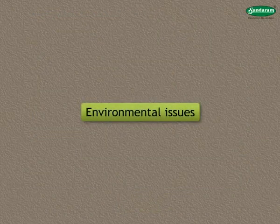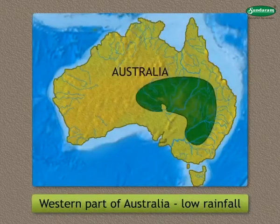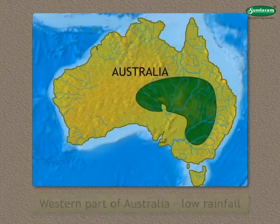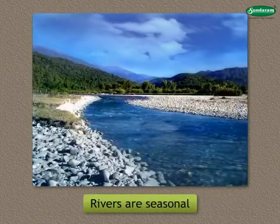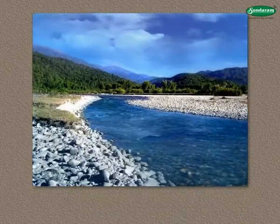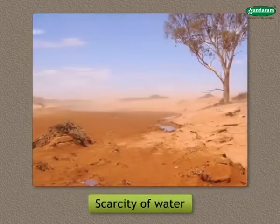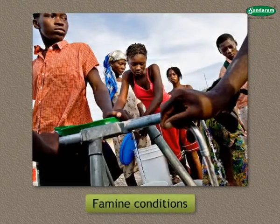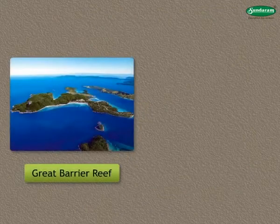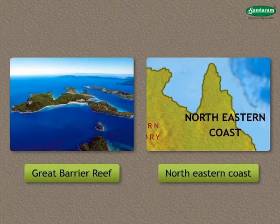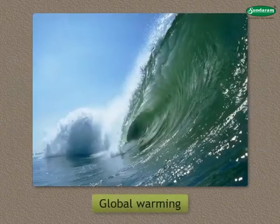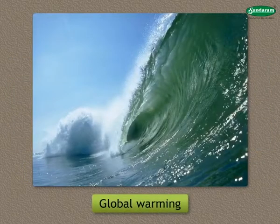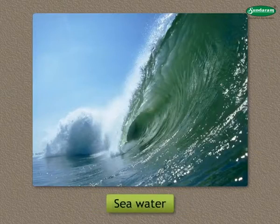Environmental Issues: 1. The western part of Australia gets low rainfall. Therefore, most of the rivers here are seasonal. This has created the problem of scarcity of water, and as a result, people in this region have to face famine conditions. 2. The Great Barrier Reef along the north-eastern coast of Australia is a tourist attraction. But due to global warming, the temperature of seawater is increasing and this has posed a threat to this reef.